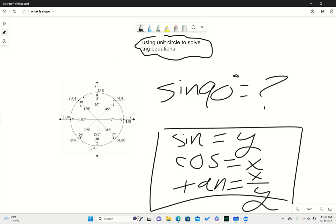So if we go to 90 degrees, which is right here, what is the y value for the x and y coordinates? It's 1. So the sine of 90 degrees equals 1.